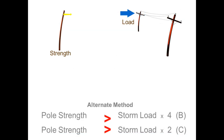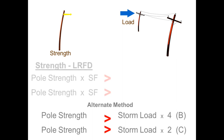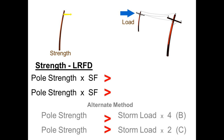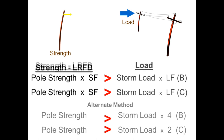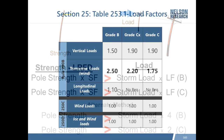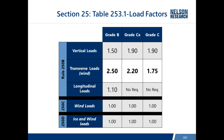Combining strength and load: in previous editions of the NESC, required pole strength was determined by multiplying storm load by an overload capacity factor — 4 for Grade B and 2 for Grade C. Today's NESC uses the LRFD format: pole strength times a strength factor must be greater than the storm load times a load factor. Table 253.1 provides load factors for wood poles, ranging from 2.5 down to 1.75 for different grades.